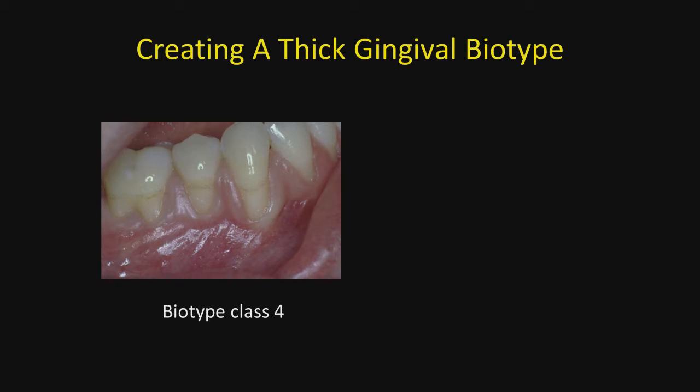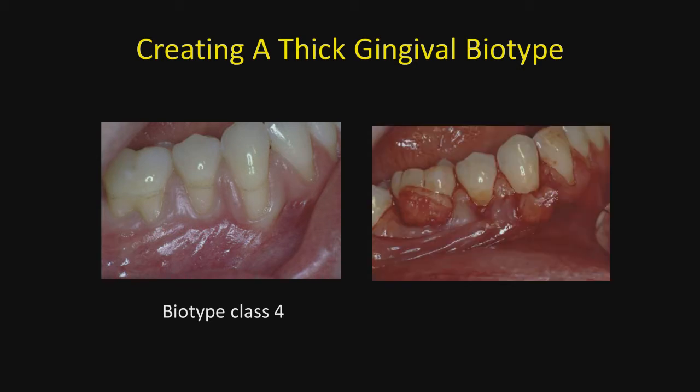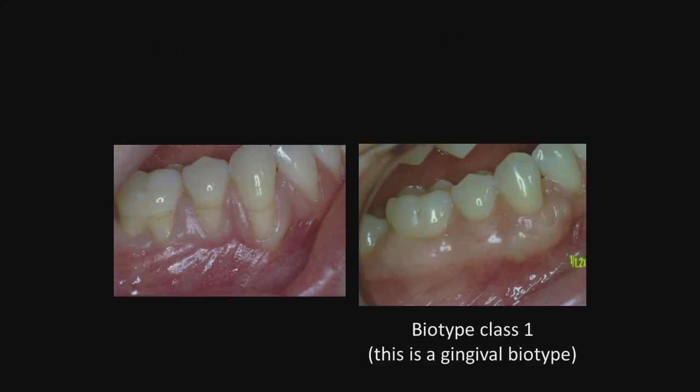Creating a thick gingival biotype. On the left, you can see that we have a type four biotype — we have a dehiscence and certainly an inadequate thickness of gingival. We're going to use a fairly thick connective tissue graft. Here we can see on the post-op that we have taken that type four biotype and created a type one biotype, because this is over two millimeters thick, but it is purely a gingival biotype as no bone is on the facial of those teeth.